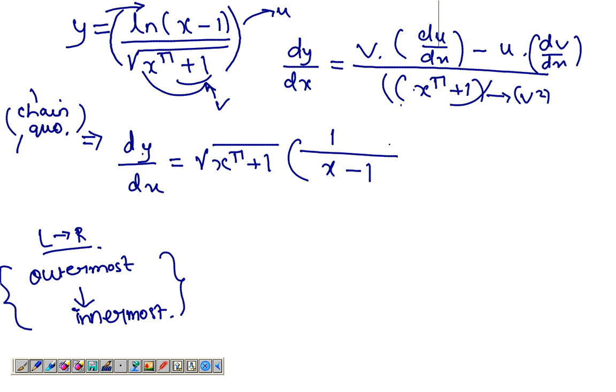So moving on from the outermost. Now, the derivative of this is simply 1 over x minus 1. Take away u, which is ln x minus 1 and the derivative of v.